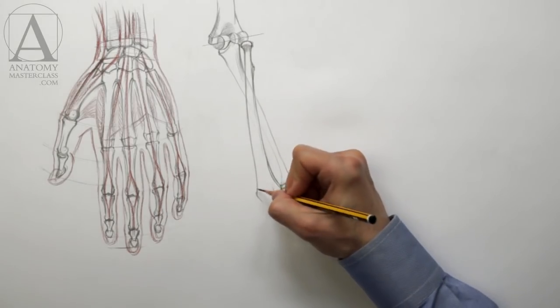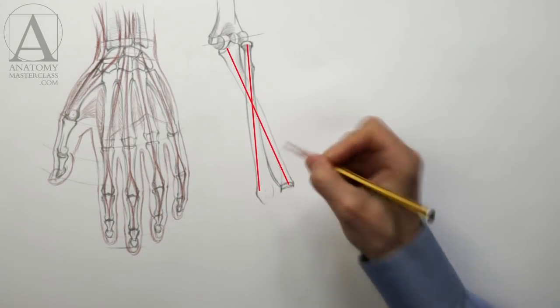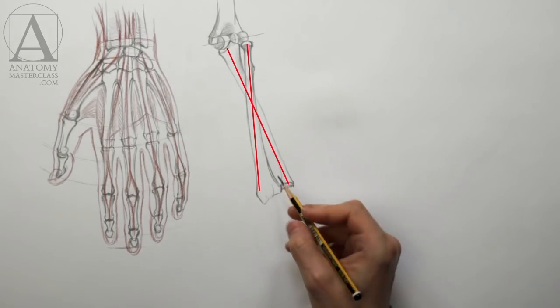In the pronation position, the radius rotates around the ulna and overlaps it from above, forming an X shape.